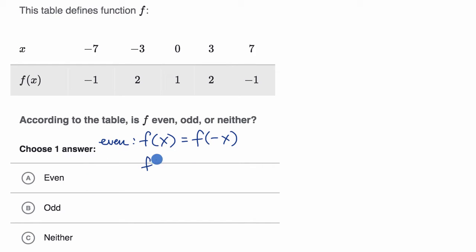And if f of x is equal to the negative of f of negative x, or another way of saying that, if f of negative x is equal to negative f of x—these last two are equivalent—then we are dealing with an odd function. And if neither of these are true, then we're dealing with neither.